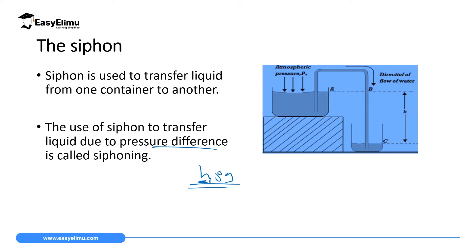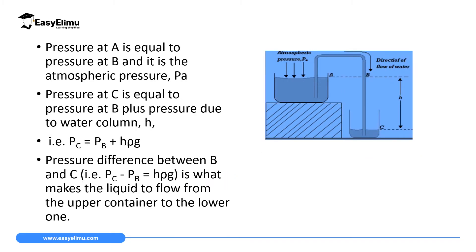We are going to use this process called siphoning to transfer liquids from one container to another. To set up a siphon, you must have two tanks. The first tank must be at a very high height, then the second tank must be at a lower height. The first tank contains the liquid you want to transfer, and the second tank is the one receiving the liquid. You will have a pipe which you use to transfer that liquid.